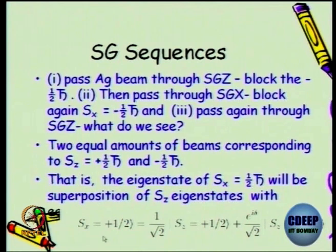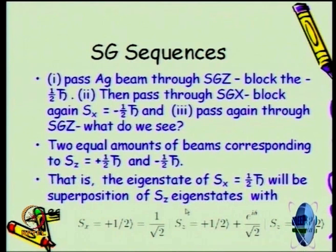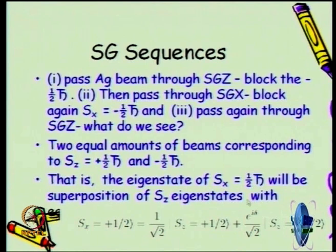Going back to the Stern-Gerlach sequence of measurements: the Sx eigenvalue is ±ℏ/2 (suppressing ℏ for now). After making the beam go through the SGx apparatus, the state with ±1/2 will be a superposition of the two basis states. Experimentally, we saw equal intensity, so we put the magnitude as 1/√2. We want to normalize the states. There could be a relative phase factor which will not be experimentally detected, but in principle you can have a relative phase factor — the overall phase factor is useless, but a relative phase factor is allowed.